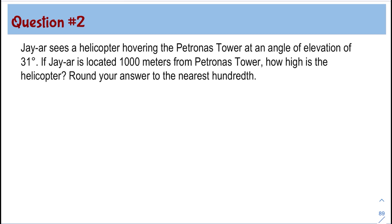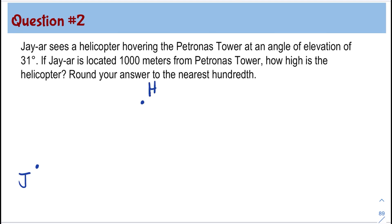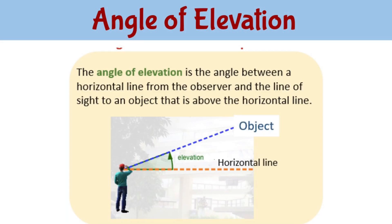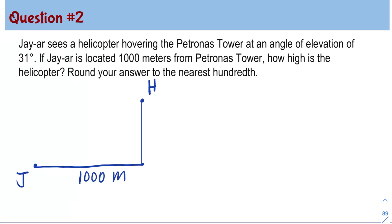To draw the diagram for question 2, let's assume that point J is where JR is located and point H is the location of the helicopter hovering over the Petronas Tower. So now we can draw the horizontal distance. JR is 1,000 meters from the base of the Petronas Tower, so this means that this is 1,000 meters. The angle of elevation is 31 degrees — that's the angle between a horizontal line from the observer and the line of sight to an object. So line GH is the line of sight, and the 31 degree angle is formed by that line of sight and the horizontal line.